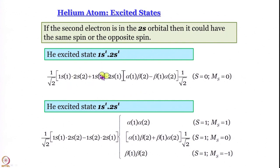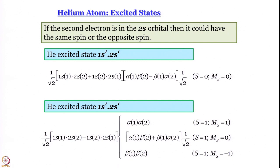For the antisymmetric spatial part, we multiply by one of the three symmetric spin functions — alpha(1)alpha(2), beta(1)beta(2), or (1/√2)[alpha(1)beta(2) + beta(1)alpha(2)] — generating three wave functions in total. These correspond to the S=1, M_S=+1 state; the S=1, M_S=0 state; and the S=1, M_S=−1 state.